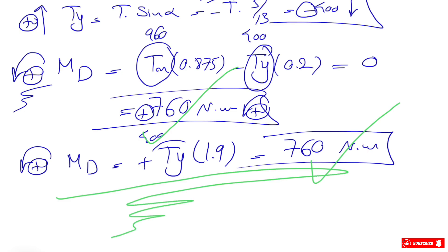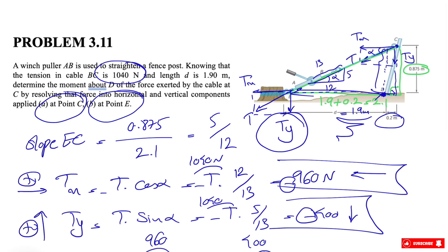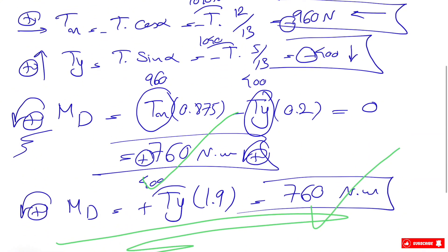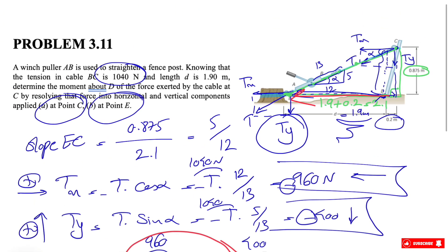We get the same number — 760 newton-meters — exactly as expected. This shows that we are free to pick any point on the line of action of the force and we get the same moment. When we apply the force at point E, the moment of Tx cancels out, making it a shorter calculation. But both approaches work. It's better to choose the point that eliminates one component when possible.